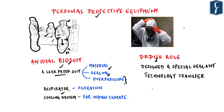Apart from the over-pressure mechanism, an ideal biosuit should also have a respirator. Coming into close contact with a COVID patient means inhaling infected air, especially at very close distances. Therefore, you need an independent respirator with a filtration system that provides air totally purified and independent of the room air. Additionally, the specific Indian climate — hot and humid — requires a cooling system, since medical professionals deal with patients continuously for 36 to 48 hours.